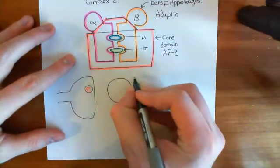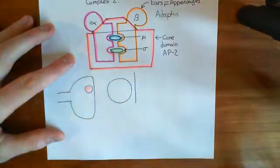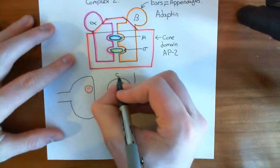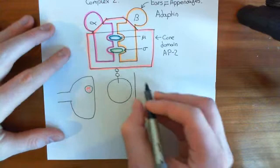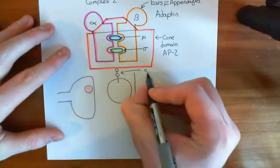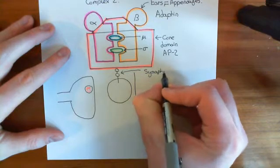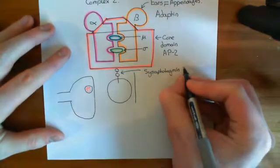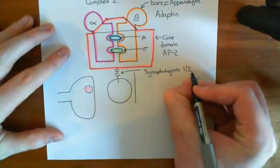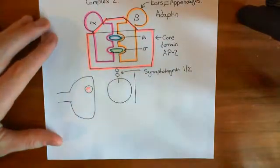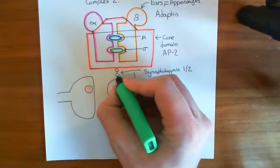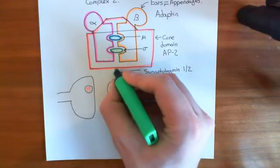Here is our synaptic vesicle, which is docked at the plasma membrane. One of the proteins that is in the synaptic vesicle membrane is a protein known as synaptotagmin. So here is my picture of synaptotagmin. Usually, the form of synaptotagmin within synaptic vesicles is synaptotagmin 1/2. There are 19 different isoforms of synaptotagmin; the two specifically in synaptic vesicles are synaptotagmin 1/2. We'll outline this protein in green.